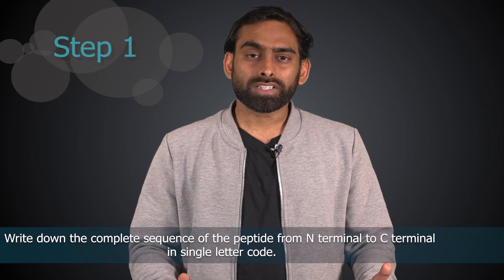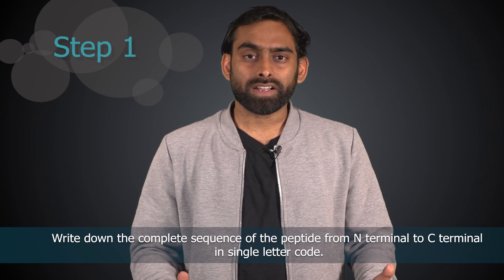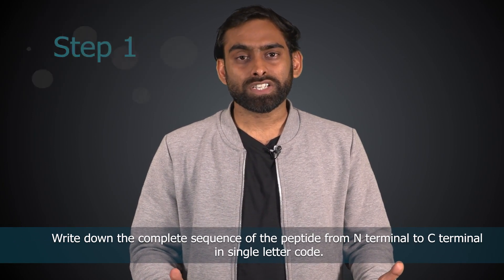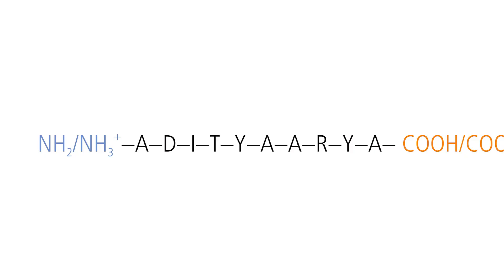Now let us move into the five-step method to determine the charge of a peptide. Step one: write down the complete sequence of the peptide in single letter notation from N terminal to C terminal. In the example shown, I have written my own name as a potential peptide: A D I T Y A A R Y A. The first amino acid, alanine, represents the N terminal and the last letter, again alanine, represents the C terminal.